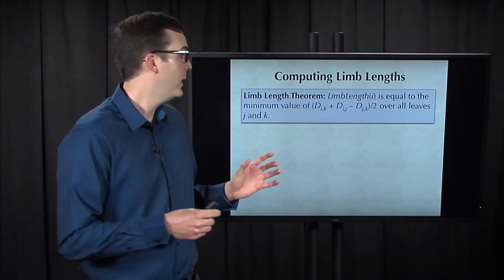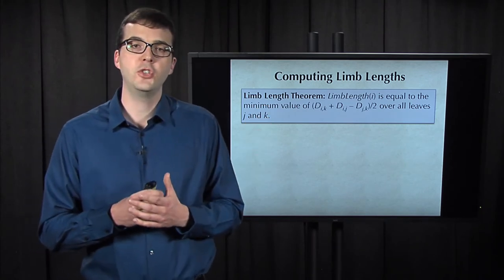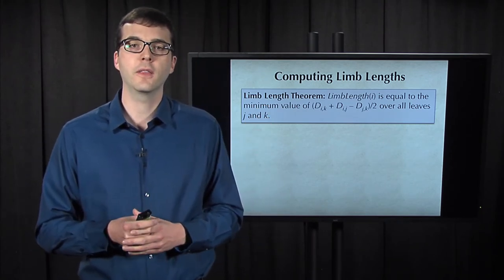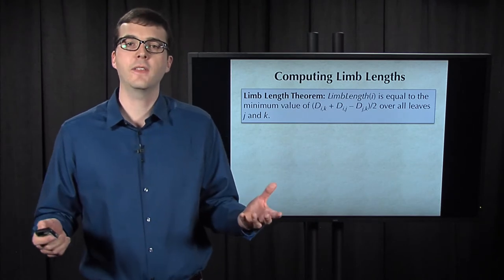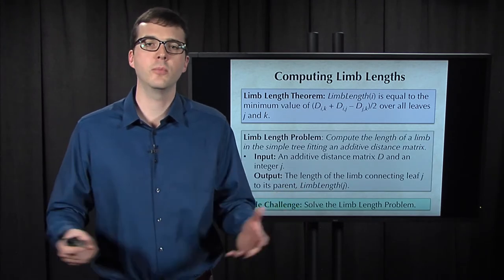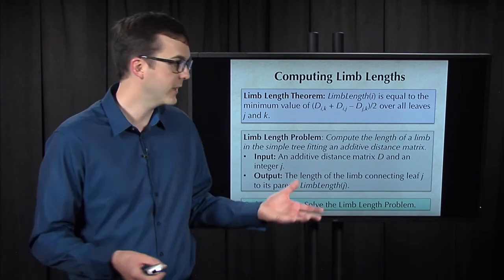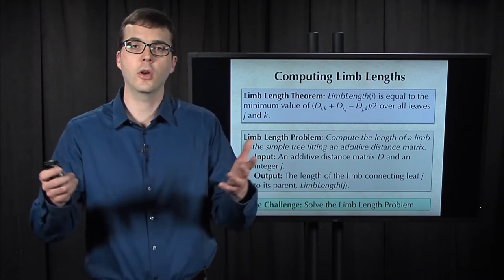So note that here we denote the limb of J using the notation limb length of J. Now that we have this theorem, you can use to compute the length of any limb of the tree, which we can state as a computational problem and you can code yourself.